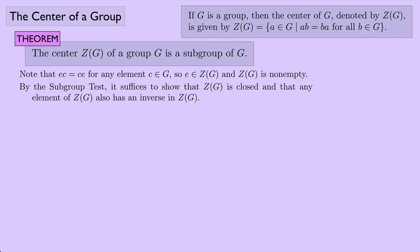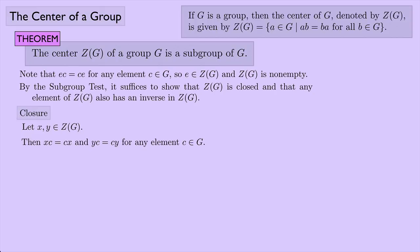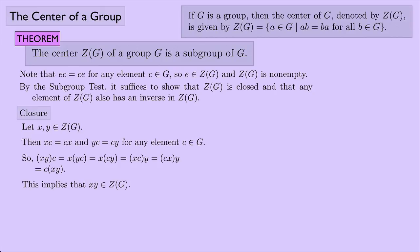For closure: let X and Y be any two elements in the center. Then X times C equals C times X and Y times C equals C times Y for any element C in G — by the definition of the center. Now I group things: X times Y times C, rearrange the grouping and ordering, and end up with C times X times Y. This implies X times Y is in the center, so the center is closed.